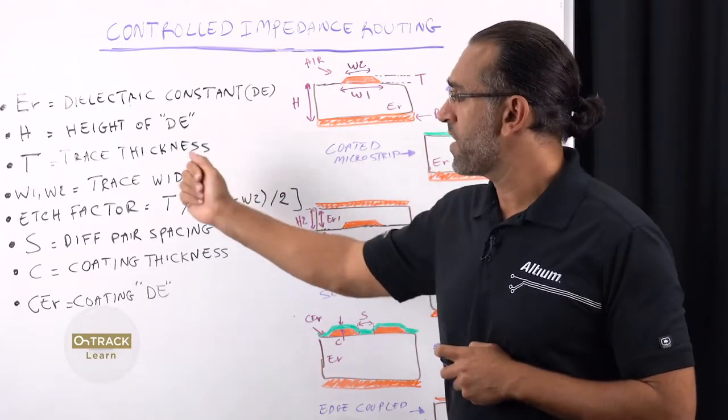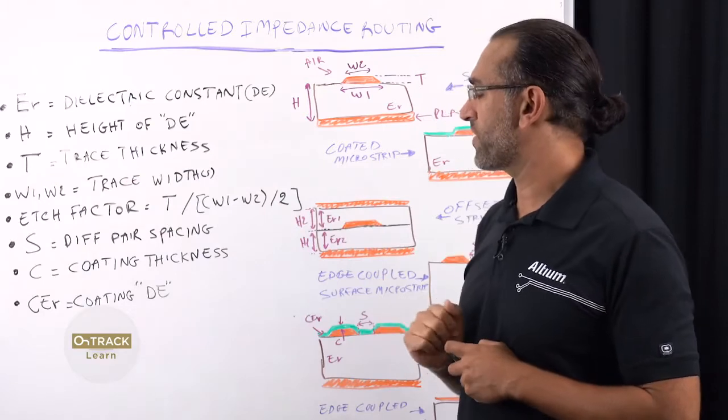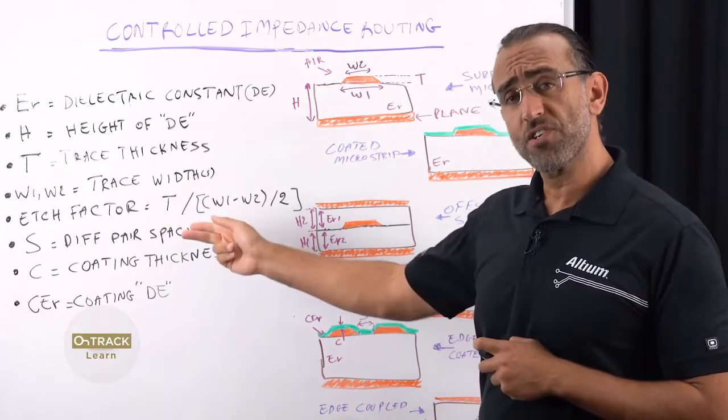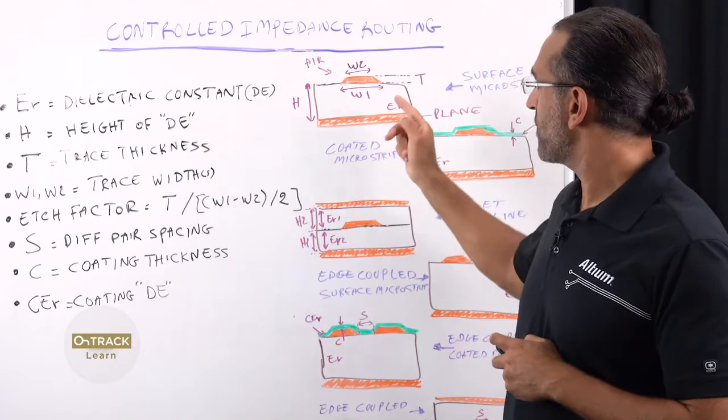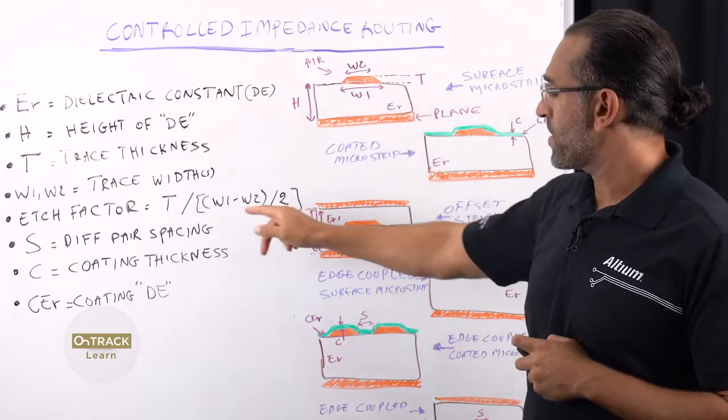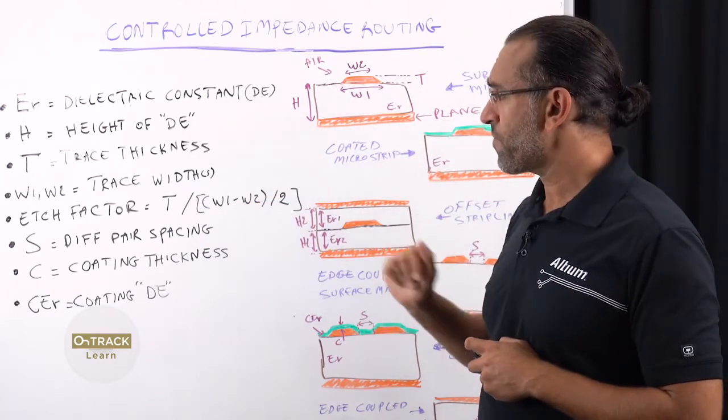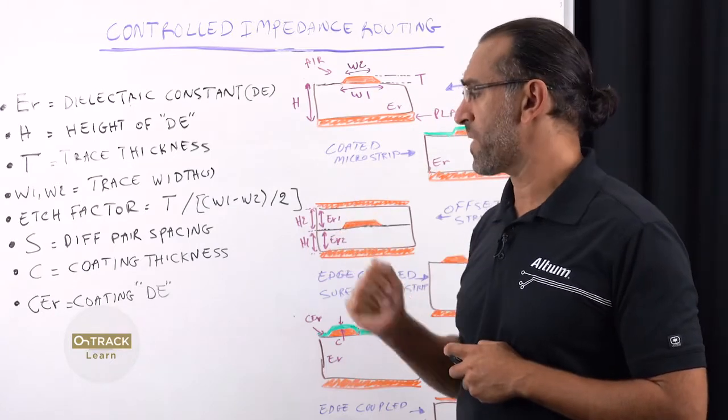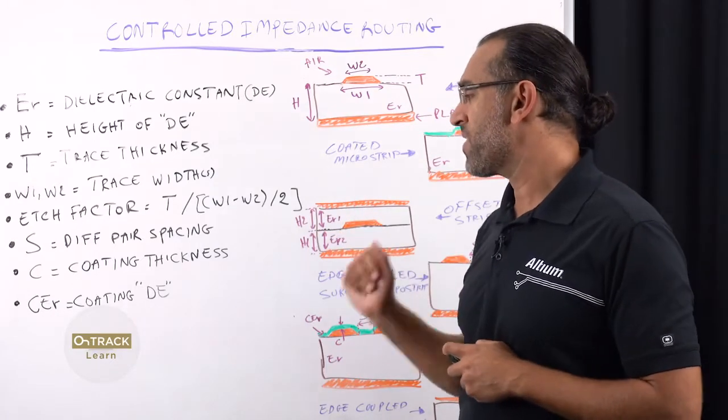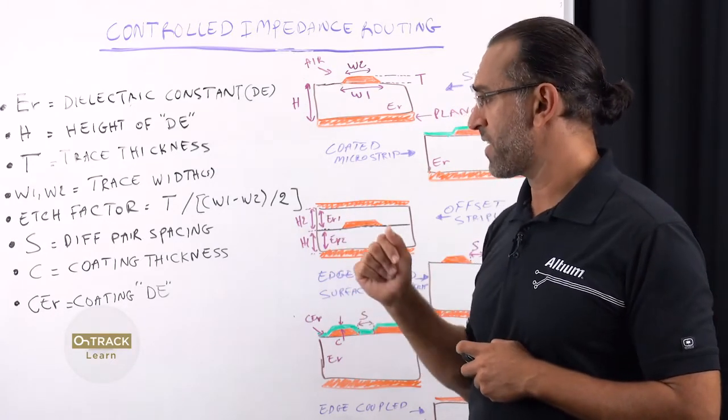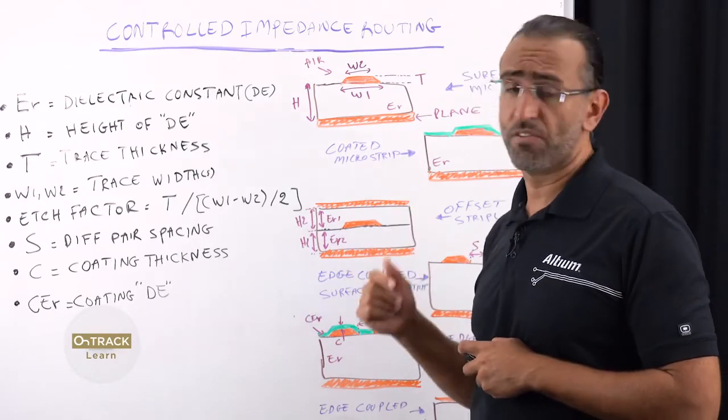And if you have differential pair, the trace widths of both signal tracks, the edge factor, which is determined by this formula you see here, and you can see in this image what every symbol represents. S, which is the differential pair spacing, and the coating thickness of your solder mask and the dielectric constants of that solder mask.